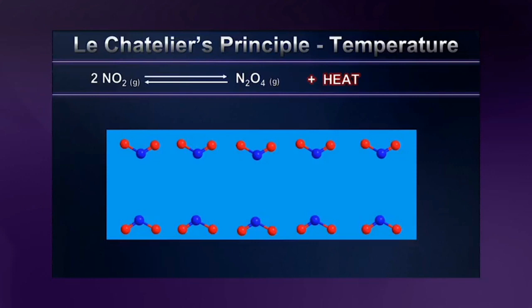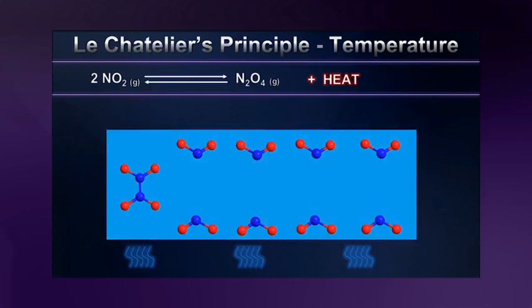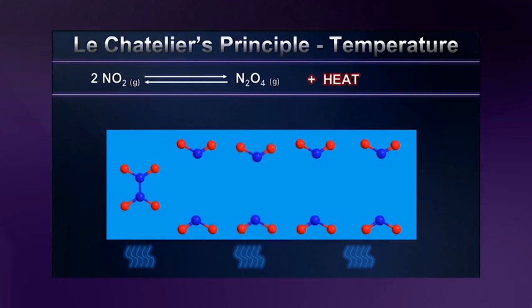Specifically, when NO2 comes together to make N2O4, it releases a certain amount of heat into the system. So think about this: if the system is nice and happy, and I cool it down — put it in an ice bath, the refrigerator, any way to get the temperature down — Le Chatelier's principle says that reaction is not happy anymore. I took some heat away, and it is going to try to undo my work. It's going to try to produce heat by shifting the equilibrium in the direction of N2O4. Make a new molecule of N2O4 in our system, and it heats up again.